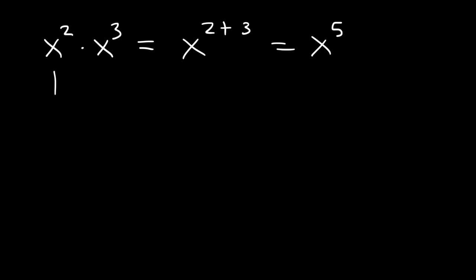Now to check it, x squared is x times x. x cubed is x times x times x. Notice that we have 5 x variables multiplied to each other. And that's why it's x to the 5th.